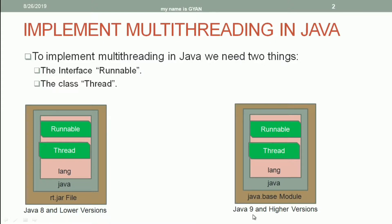But if you are working on Java 9 and higher versions of Java, you can find the java.base module. In the java.base module, you will have a package whose name is java.lang, and in that package, you can find the class Thread and the interface Runnable. So the class Thread and the interface Runnable are present in java.lang, which is present in the module java.base. The class Thread implements the interface Runnable.